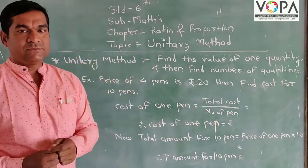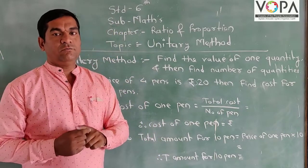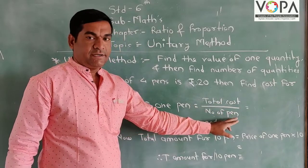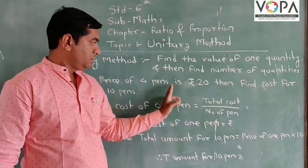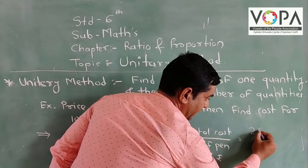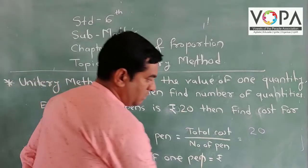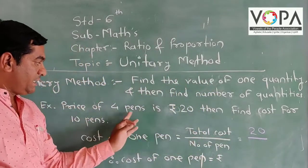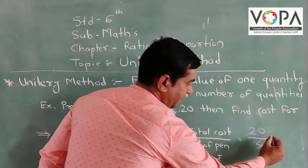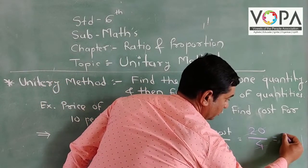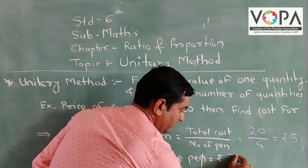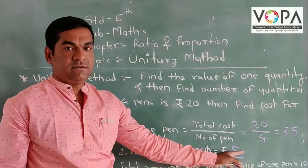So in this case, we find the cost of one pen first. The cost of one pen is equal to the total cost divided by the number of pens, which is 20 divided by 4. So 4 ones are 4, and 4 fives are 20, meaning the cost of one pen is equal to 5 rupees.